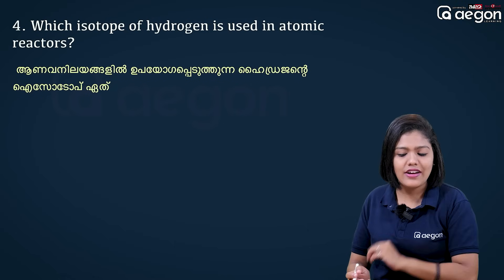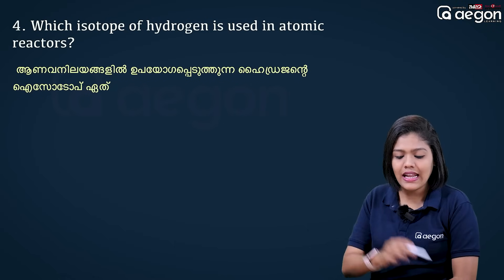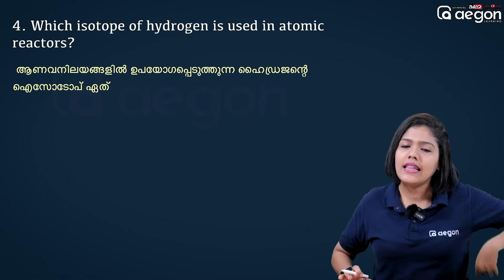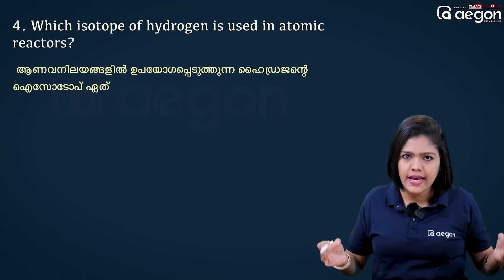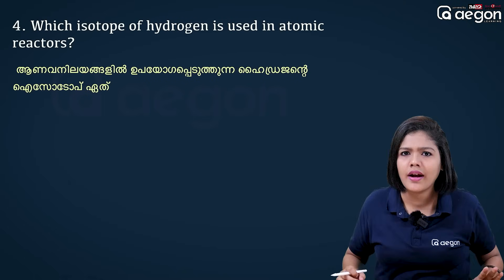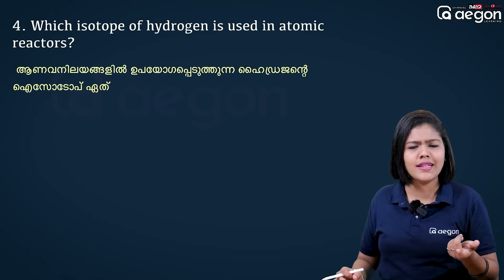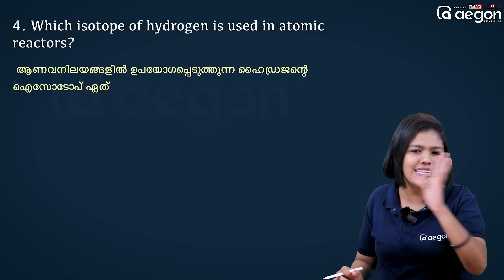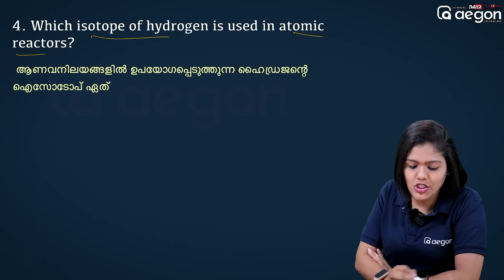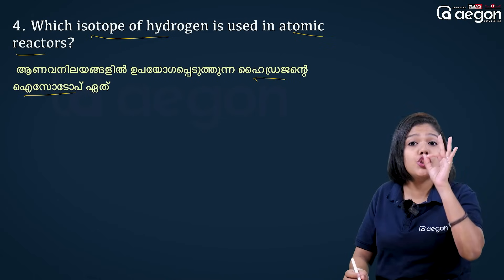Which isotope of hydrogen is used in atomic reactors? The isotopes of hydrogen include H-1 (protium), H-2 (deuterium), and H-3 (tritium). The answer is deuterium — we use deuterium in atomic reactors.